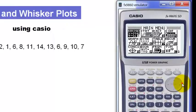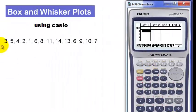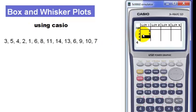So first, we have to go to the stat menu, type in all these numbers under list 1: 8, 11, 14, 13, 6, 9, 10, 7.